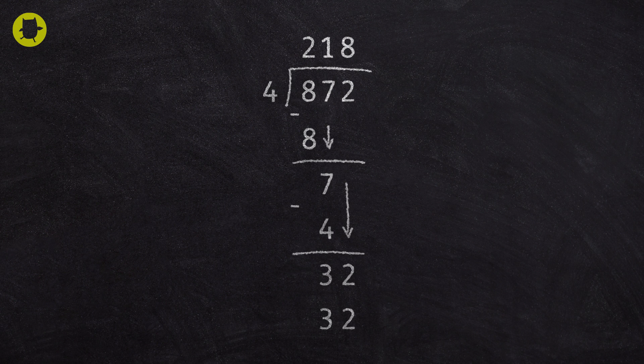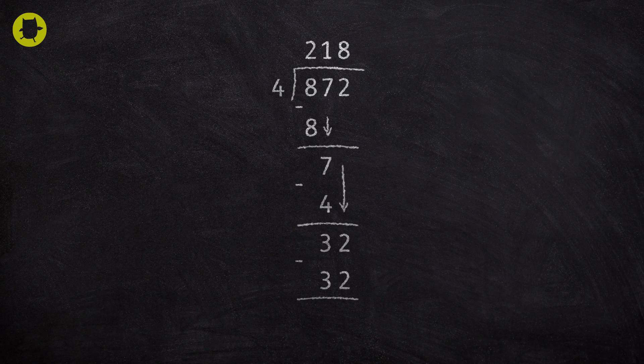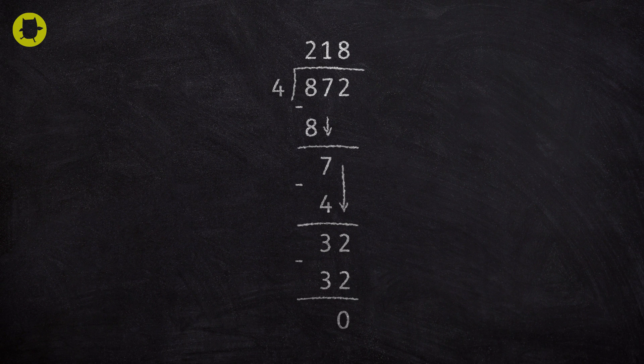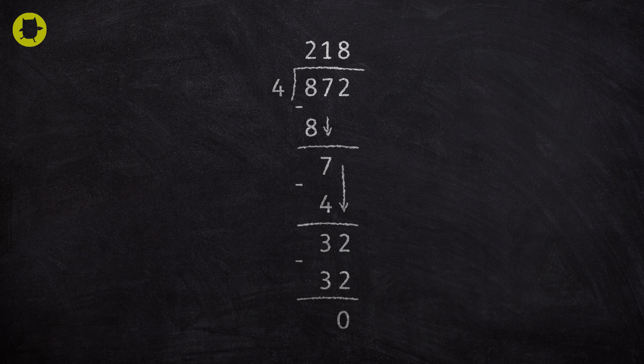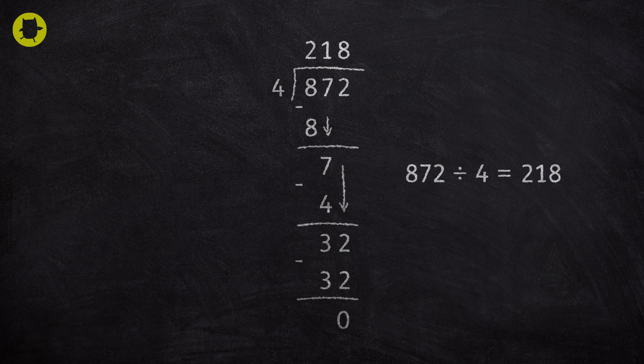Then we ask, what is 32 minus 32? The answer is 0, so we have no remainder. So the answer to 872 divided by 4 is 218.